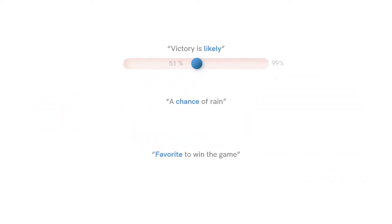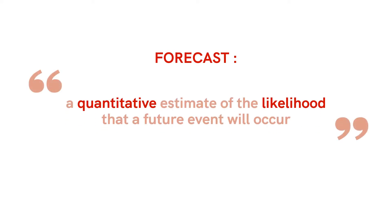Likely could mean 51% to 99% or anything in between. A chance of could mean 1% or 99% or anything in between. Favorite just means more likely than something else, but it doesn't tell you how much more likely. So instead of using vague language, a proper forecast is a quantitative estimate of the likelihood that a future event will occur.